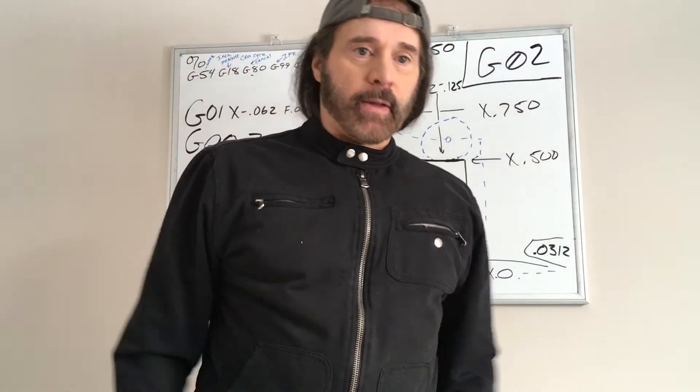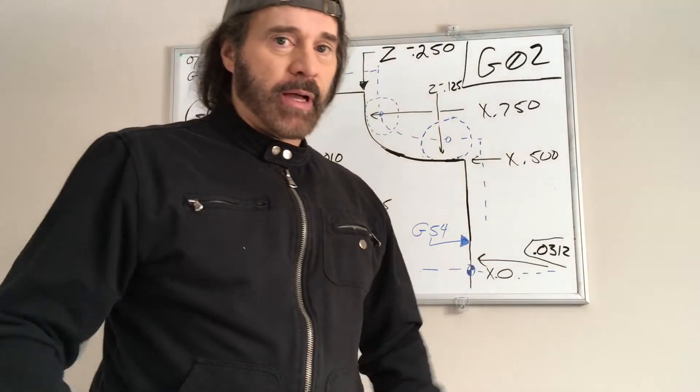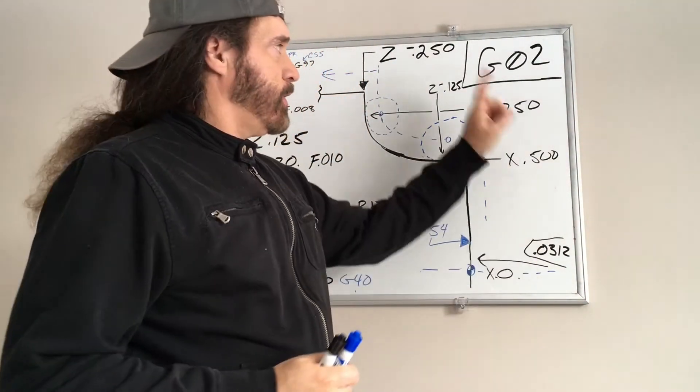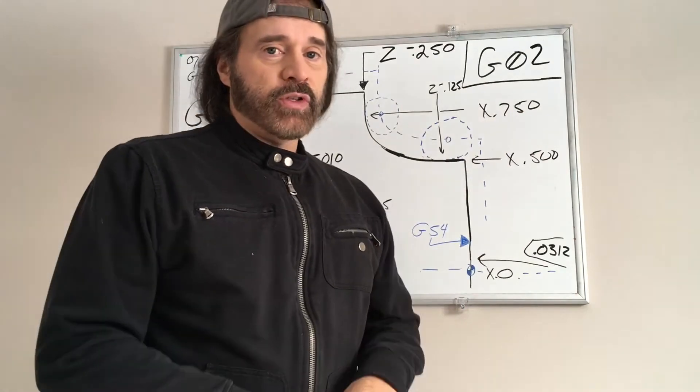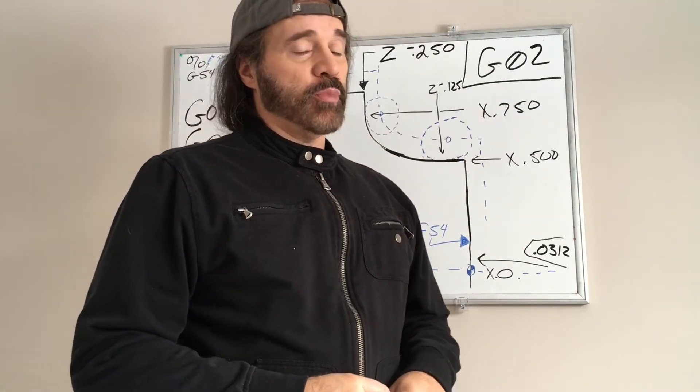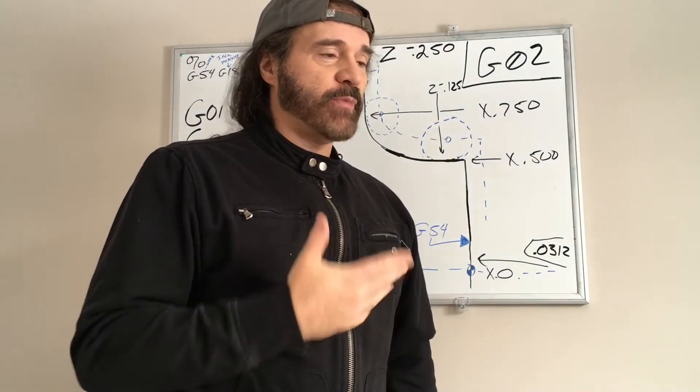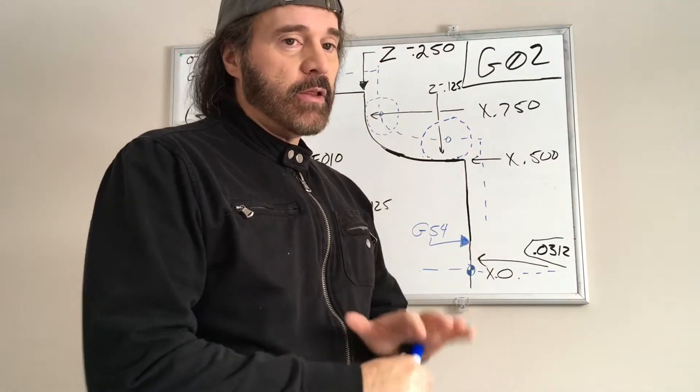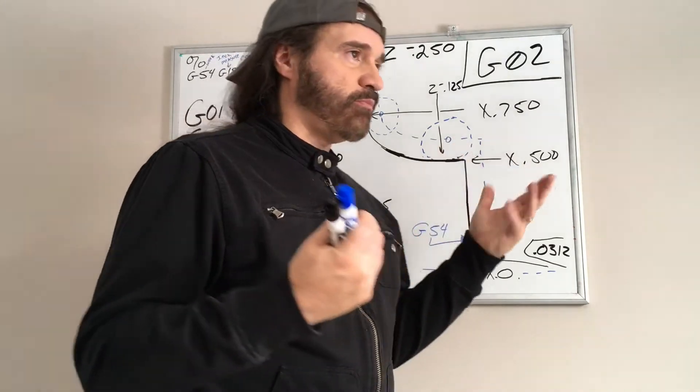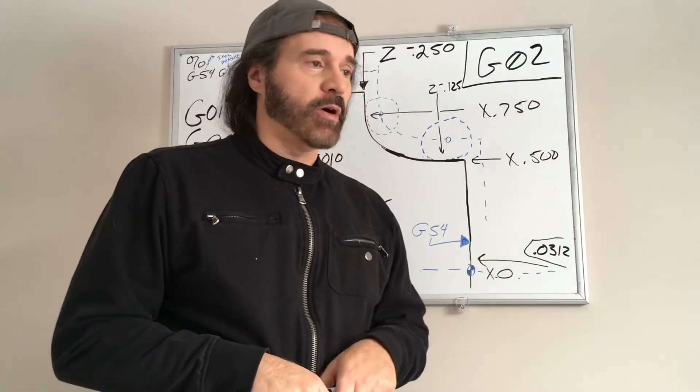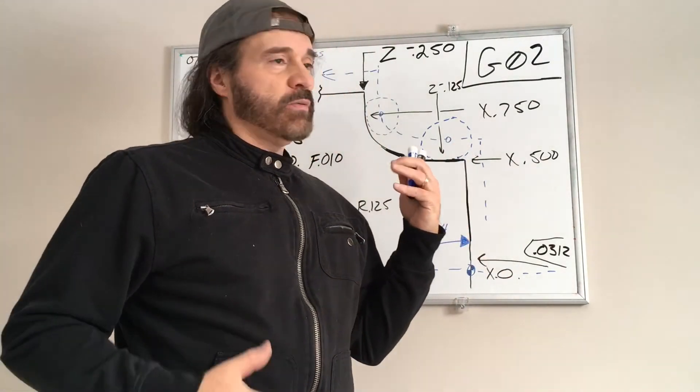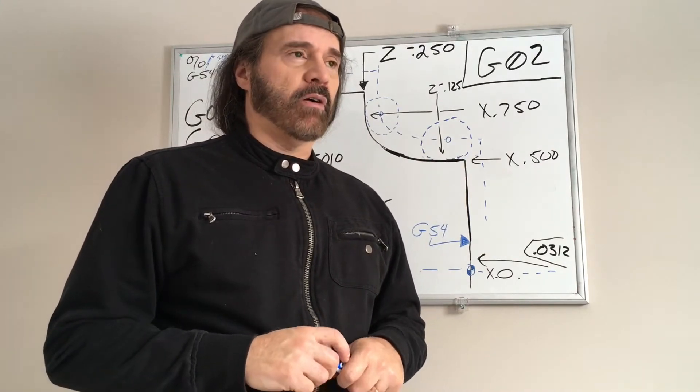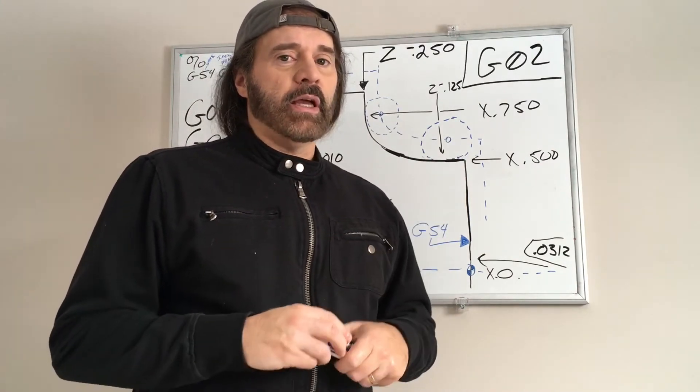Hey everyone, welcome back. I appreciate you stopping by my channel. I'm going to do what is known as a G02, which is a circular interpolation—a tongue twister. This is for a Haas CNC lathe and probably pertains to other ones too, but this is really meant for beginners and how to understand how to write these.